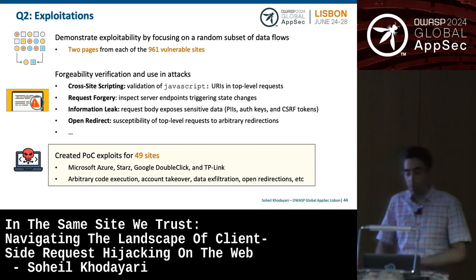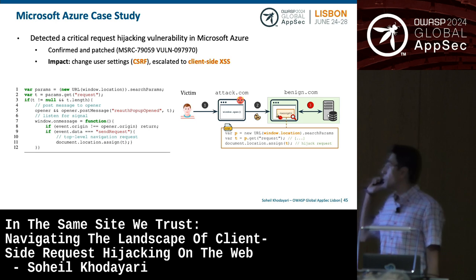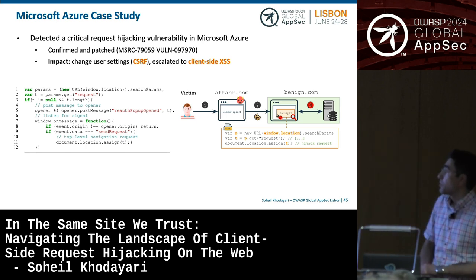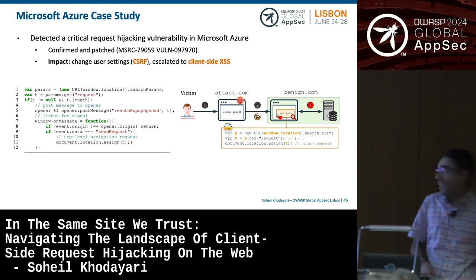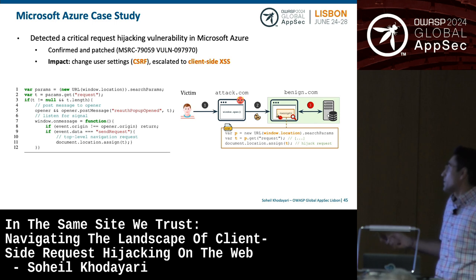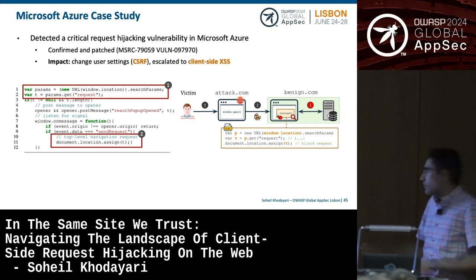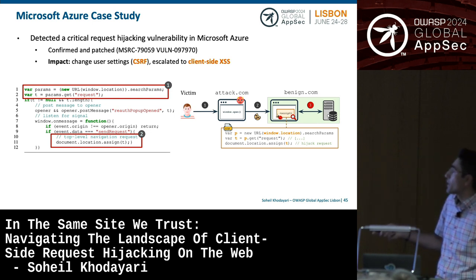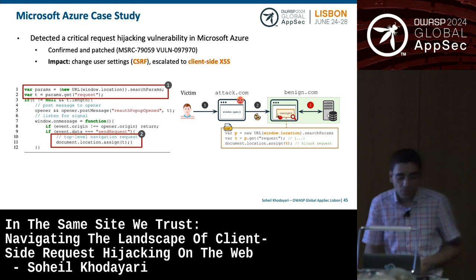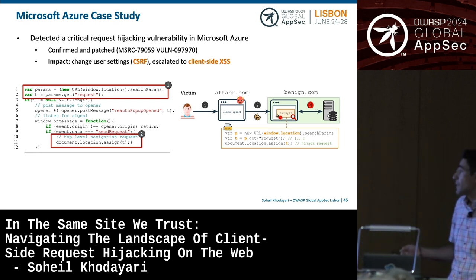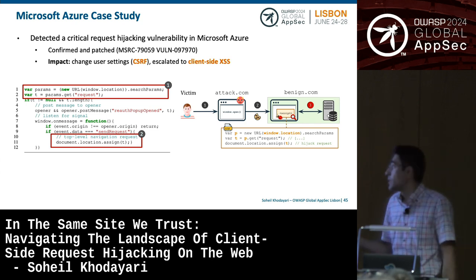An example vulnerability we detected in Microsoft Azure — now confirmed and patched — allowed changing user settings and ultimately escalated to client-side XSS, meaning technically anything is possible from that point. The code read a value from a query parameter called 'request', which was then used in a top-level navigation request via location assignment. An attacker can set this value to javascript:alert(1), hijacking the request and causing an XSS vulnerability.